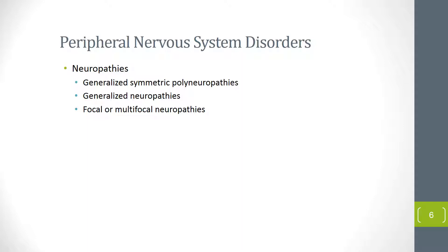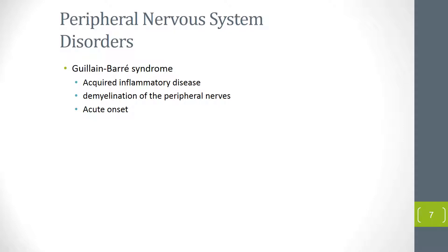Neuropathies are peripheral nervous system disorders. Neuropathy is not a single disorder but a collection or cluster of disorders. Guillain-Barré syndrome is an acquired inflammatory disease, also described as an acute immune-mediated polyneuropathy.